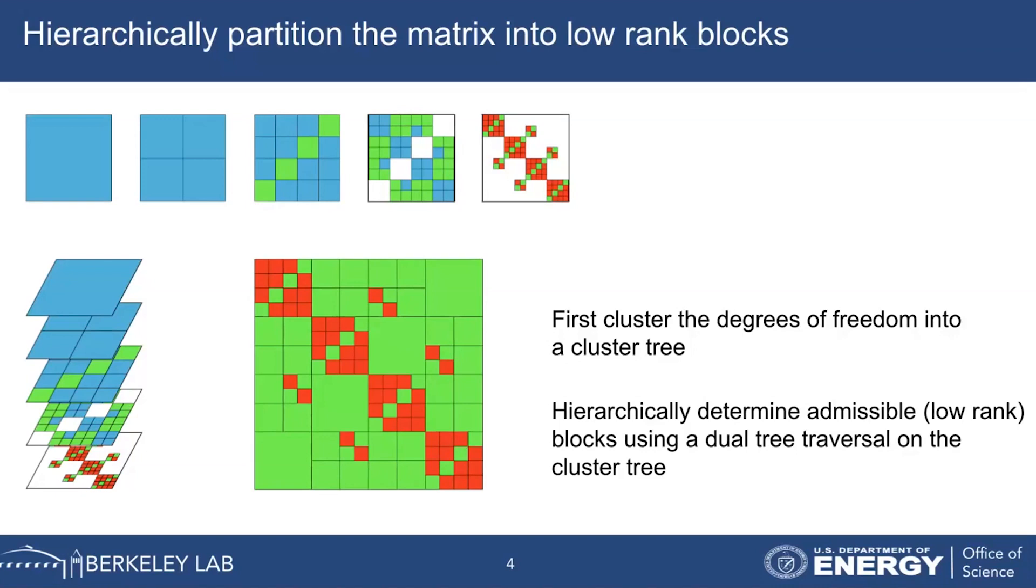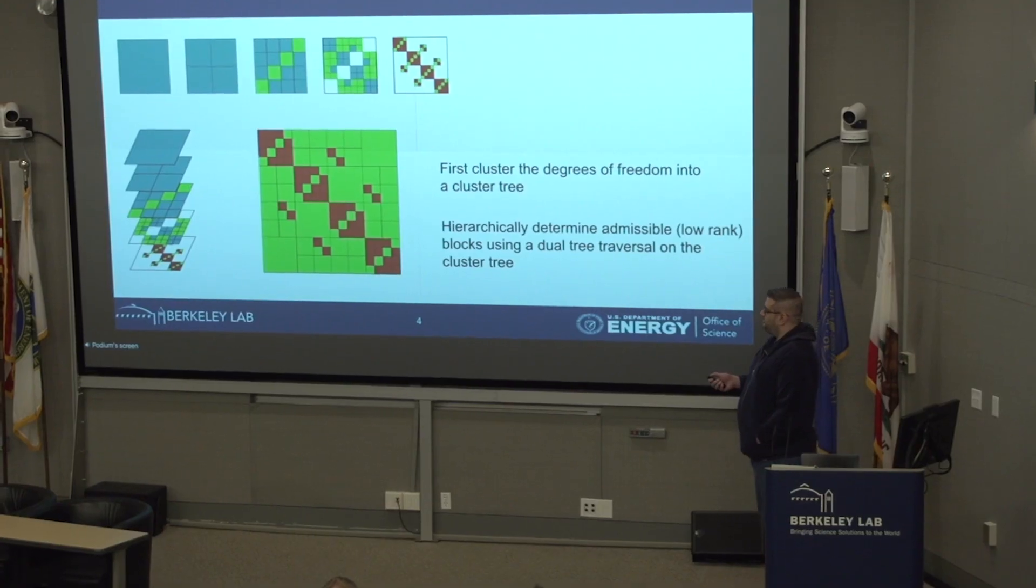Here, for example, we went from the roots level by level, figuring out at each level the inadmissible blocks in blue and the admissible blocks in green, until we reach the admissible level. When the admissible nodes are too small, we just store them in their original dense form.